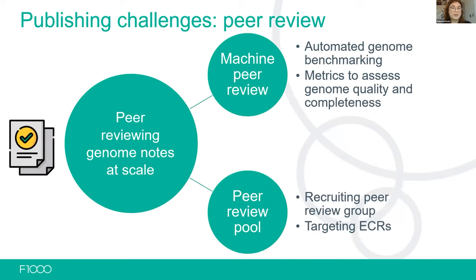The second big challenge is how do you get these genome note articles through peer review at scale? We're using something we're currently calling machine peer review — really more of an automated benchmarking report for each genome, providing alongside the article some objective metrics that allow readers and peer reviewers to assess the quality and completeness of the genome. At the same time, we're also building a peer reviewer pool, hoping to recruit a large group of interested peer reviewers who can help us to rapidly review these genome notes. We're thinking about targeting early career researchers.